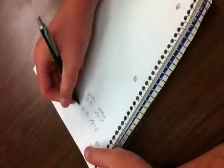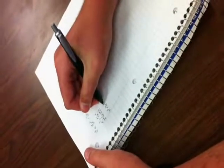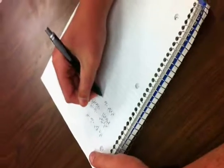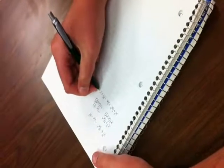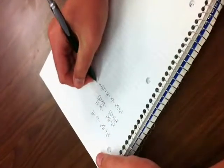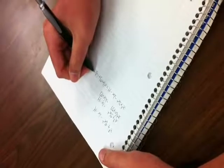Therefore, we can rewrite our equation x cubed plus 7x squared minus 2x minus 14 equals x squared times x plus 7 plus negative 2 times x plus 7.